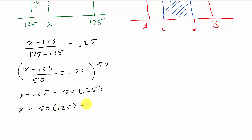So I get X equals 50 times 0.25 plus 125. Let's see, 50 times 0.25 plus 125, that gives me 137.5. And that is the 25th percentile.